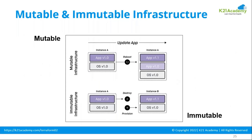Terraform also supports mutable and immutable infrastructure approaches. With mutable infrastructure, you can update your versioning — for example, today you're on version one and tomorrow you upgrade to version two by updating your code. With immutable infrastructure, any modifications are not allowed — it has to be destroyed and recreated. The previous infrastructure is fully destroyed and then the new one is created with the modified changes.